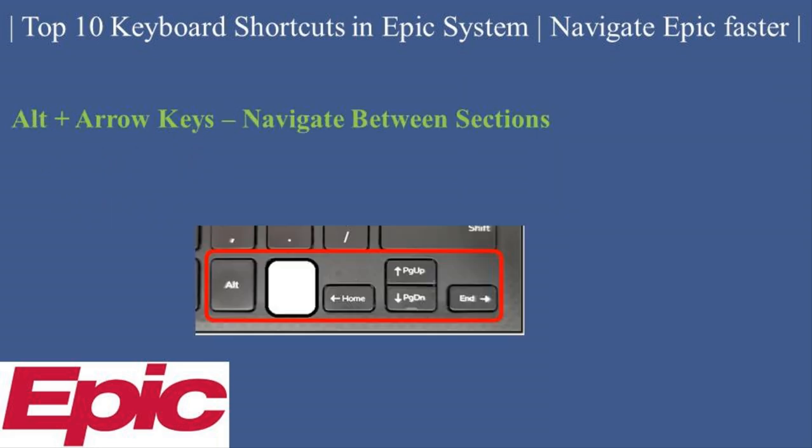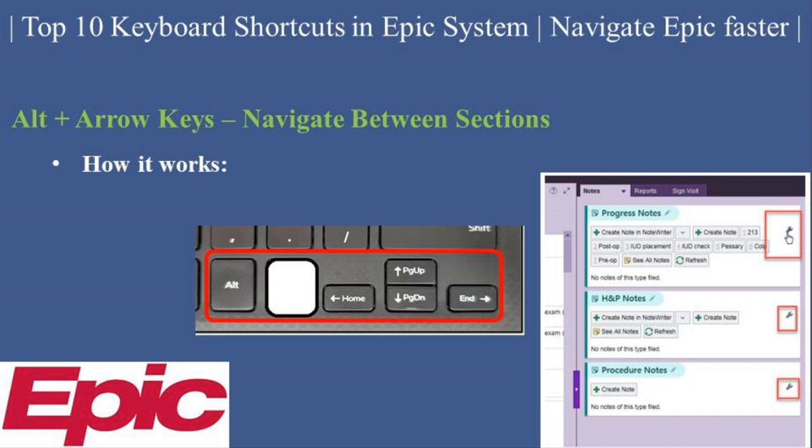Alt plus Arrow Keys — Navigate Between Sections. Ever feel stuck scrolling through Epic? Alt plus arrow keys is here to help. How it works: use Alt plus arrow keys to move between sections or tabs in a patient's chart. Example: move quickly from a patient's lab results to their medication list without reaching for your mouse.